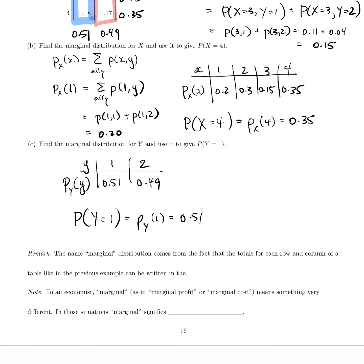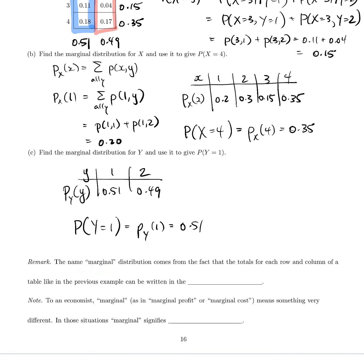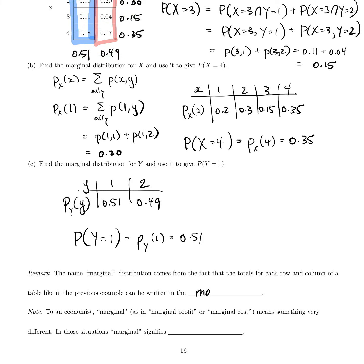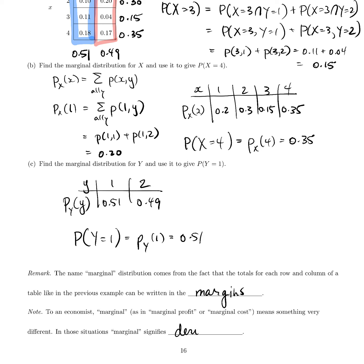Just a couple of remarks: the name marginal distributions comes from the fact that the totals for each row and column make sense to write in the margins of the table — that's where the name comes from. You may have seen the word marginal in your calculus course. To an economist, marginal — as in marginal profit or marginal cost — means something very different; you took the derivative. So the same word means something very different to an economist versus a statistician. Just be on the lookout for that.